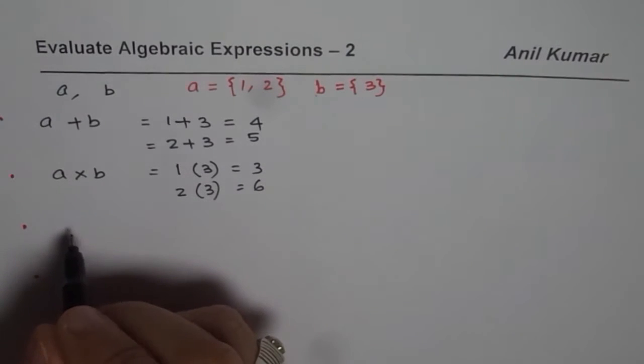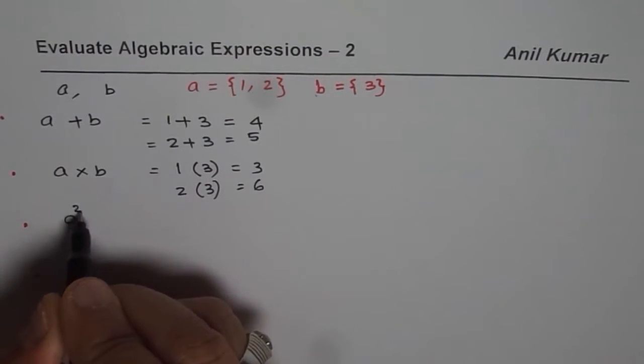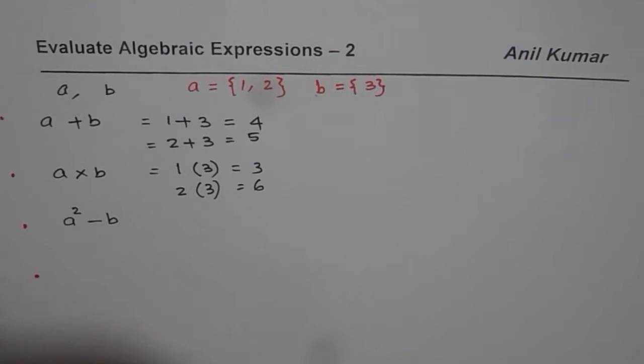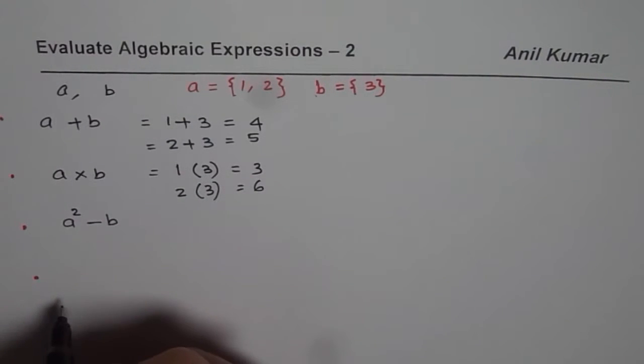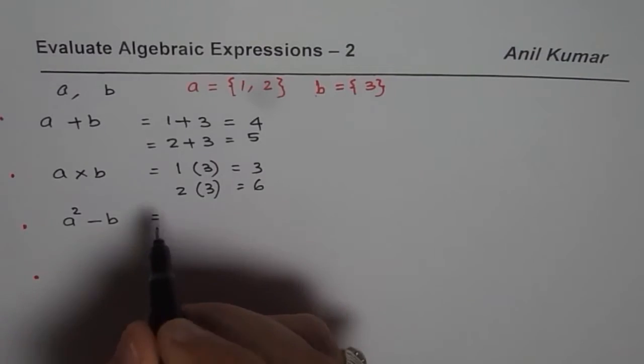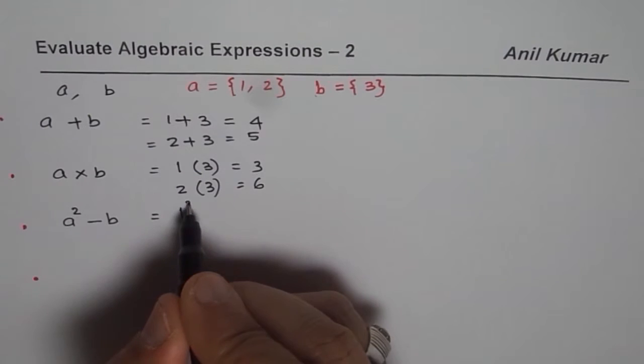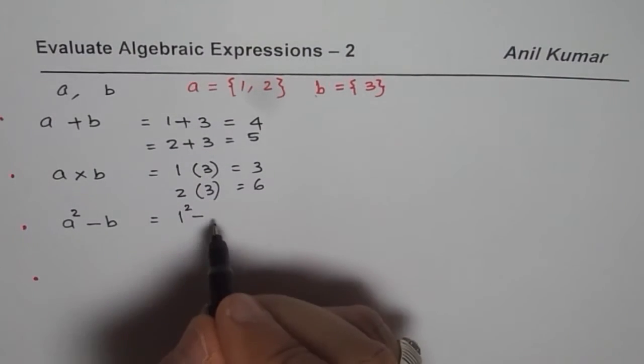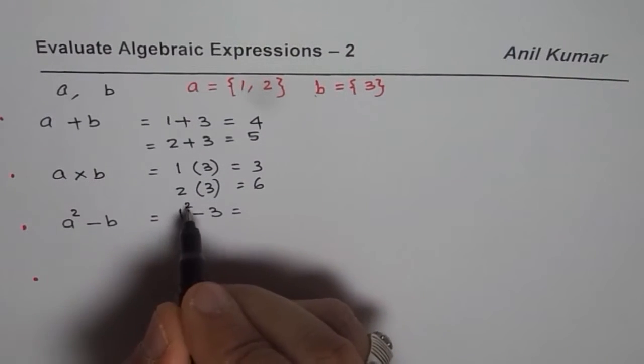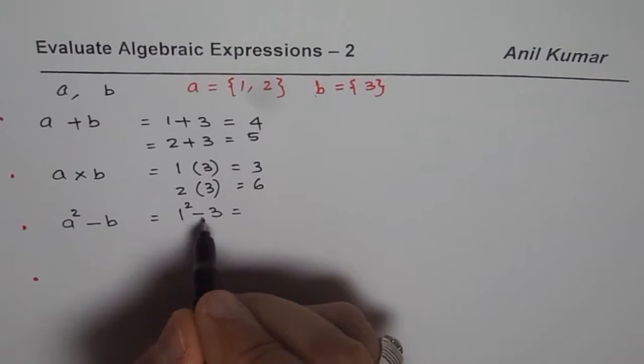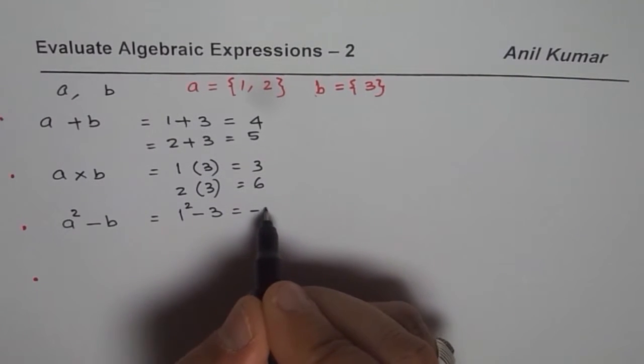Let me write down now the values as A square minus B. So A square minus B means A could have 1 or 2 as your value. If A is 1 then it would be 1 square minus B is 3. So we will write 3. So 1 square is 1, 1 minus 3 is minus 2.